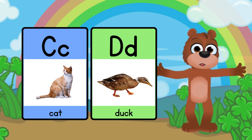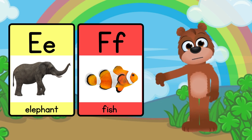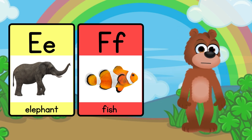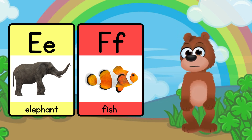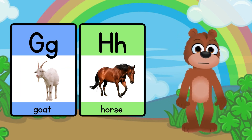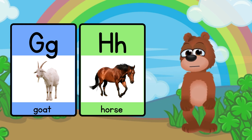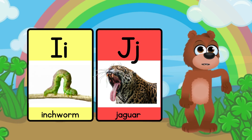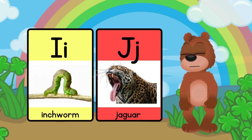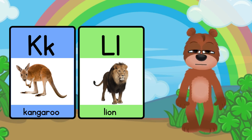D for Dot. E for Elephant. F for Fish. G for Goat. H for Horse. I for Ant. J for Jaguar. K for Kangaroo.